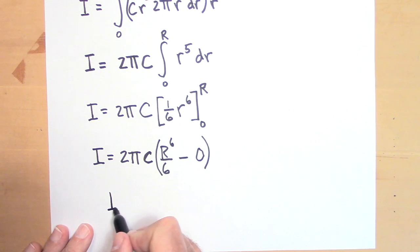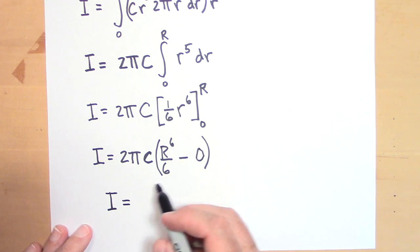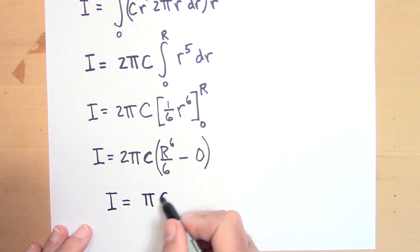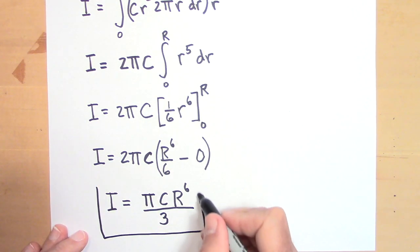Okay. And just one more step just to make that look a little better. So I is going to be equal to, two over six is going to go down to one third. So it's going to be pi times C times R to the sixth over three. And that's my rotational inertia for that disc.